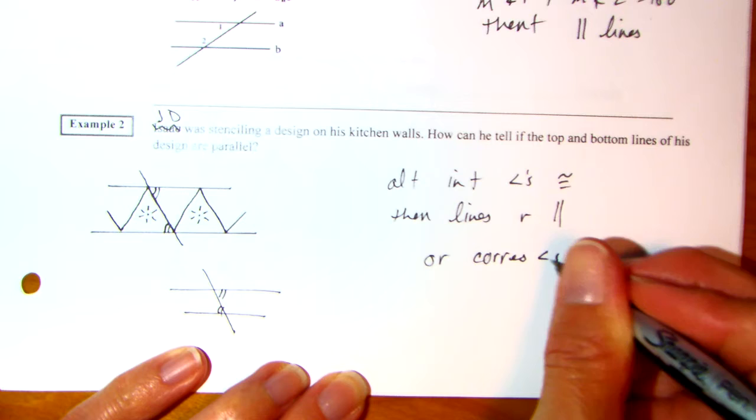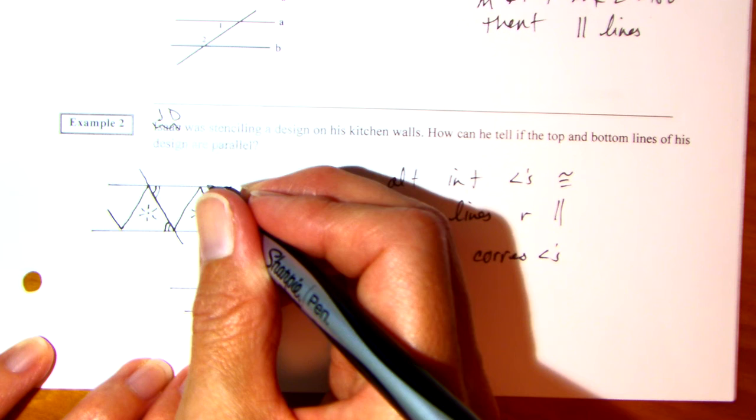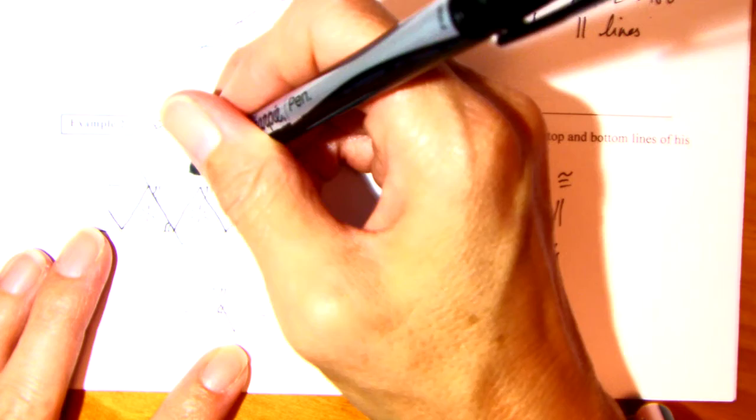You didn't have to use alternate interior angles — you could have used corresponding angles. These corresponding angles, this angle and this angle, would also work.